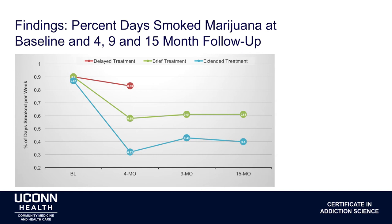The third group, after four months, was well into their nine-session treatment and had improved even more than the brief treatment group — smoking about 30% of days instead of 90%. Those treatment gains were maintained out to 15 months. This provides very strong evidence for the efficacy of brief treatments — both two sessions and nine sessions — for people with marijuana problems, using an untreated control group for the first three months, after which, for ethical reasons, participants were assigned to one of the active treatments.